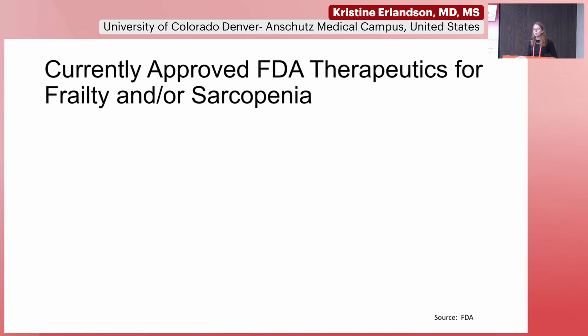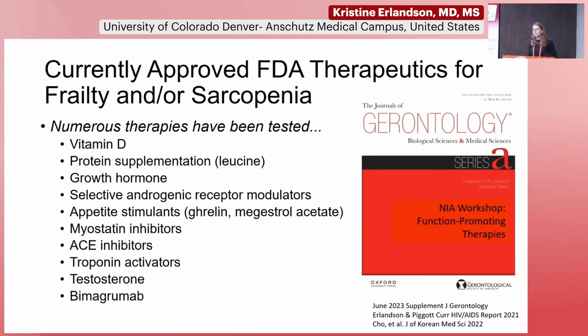These are the currently approved FDA therapeutics for frailty and sarcopenia — and as you can see, none meet these criteria. Part of this has been complicated by the definition of sarcopenia, as was discussed in Dr. Cawthon's talk: we really have struggled to come up with a way to define sarcopenia. If you don't have a clear definition of something, it's hard to say that you have a therapy to treat it. This has also been true for frailty, and as a result, we don't have any approved FDA therapies.